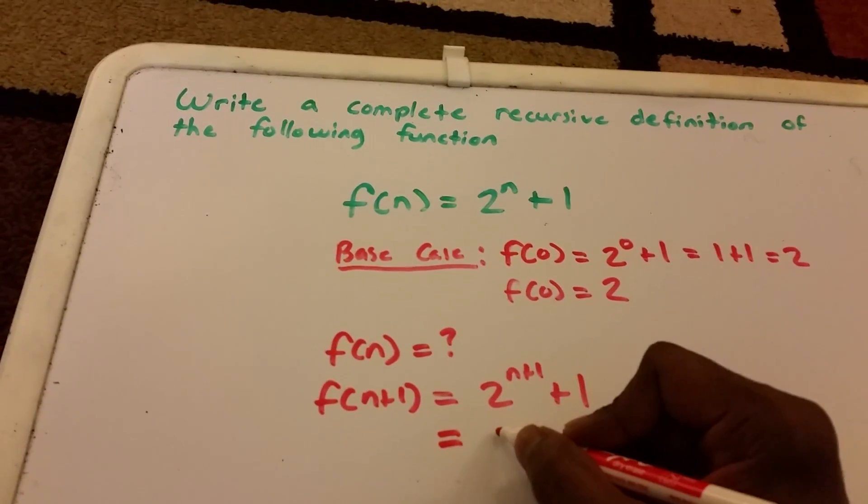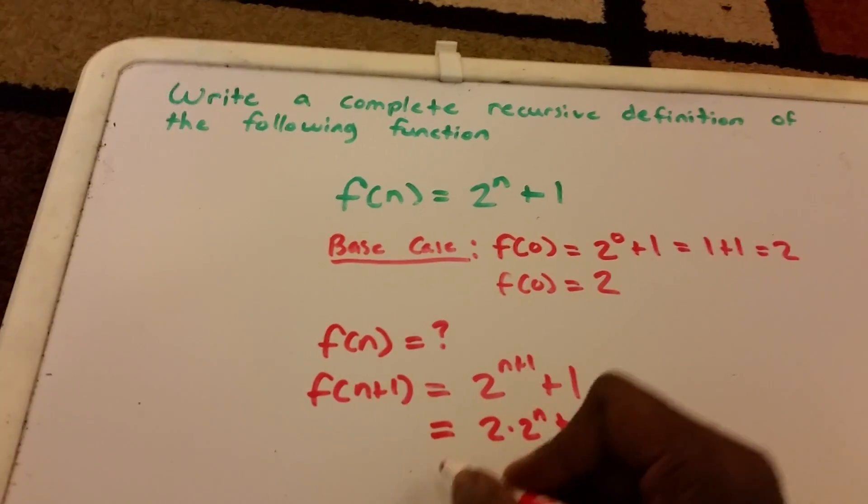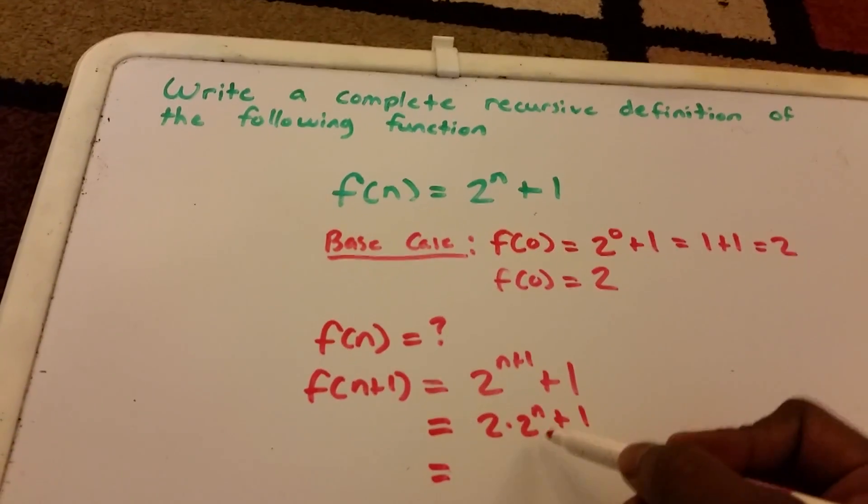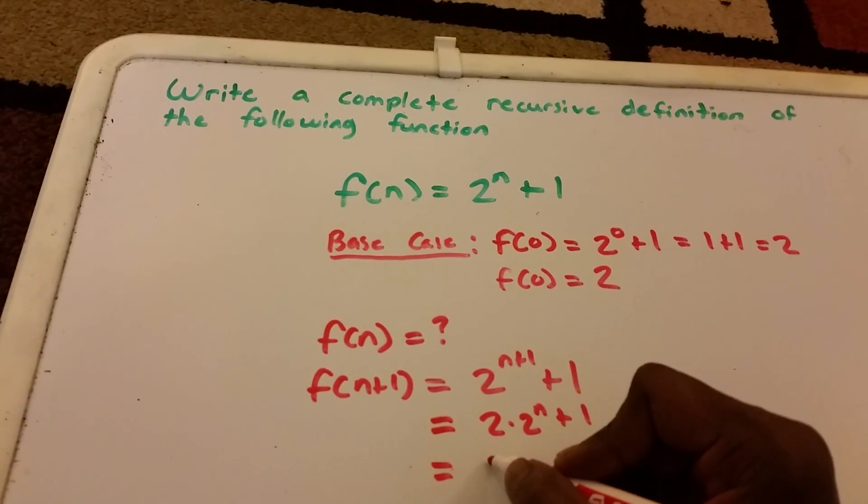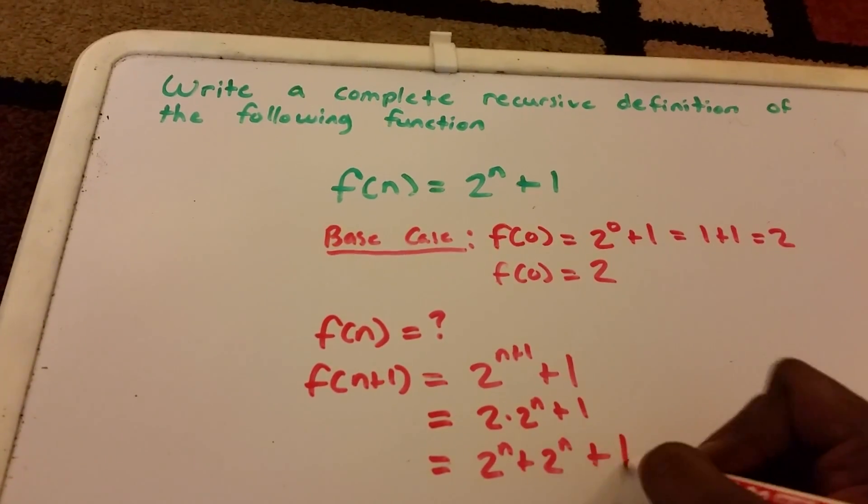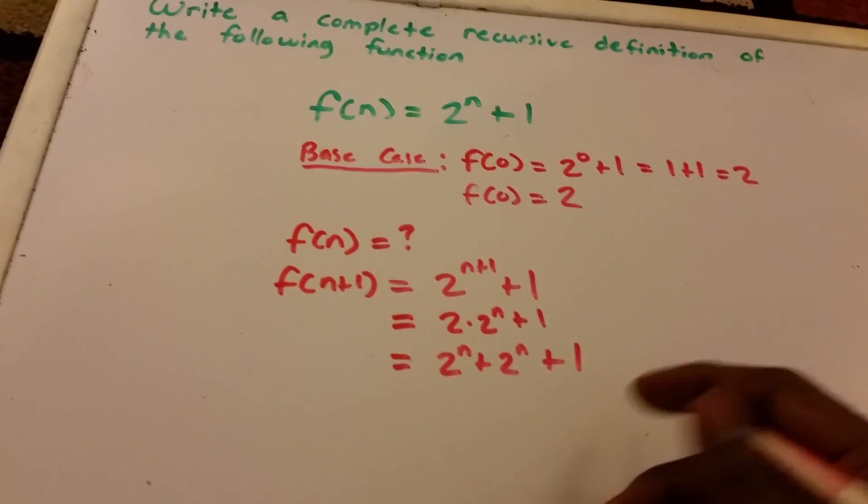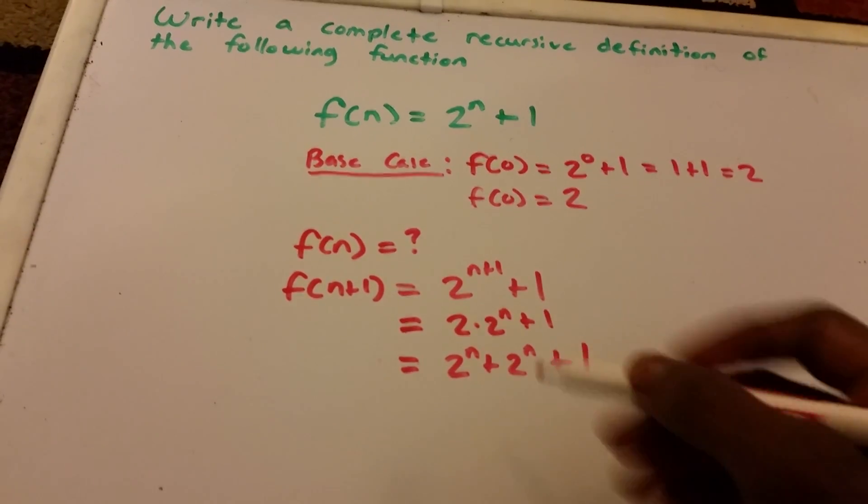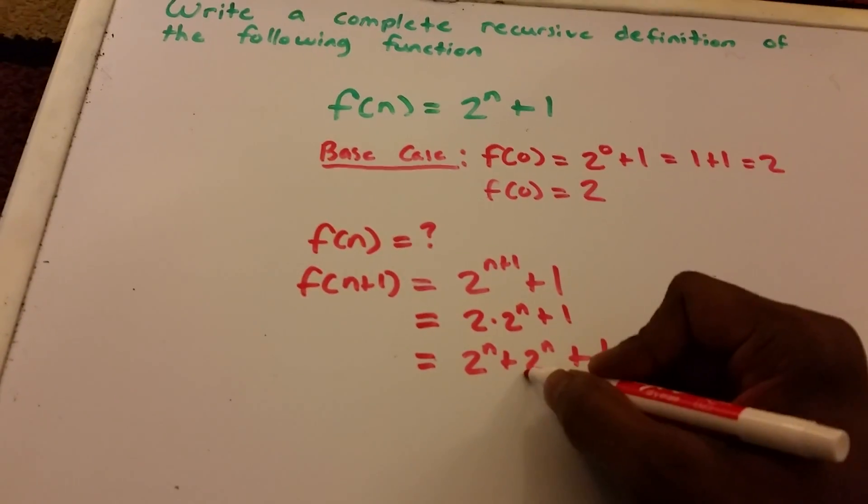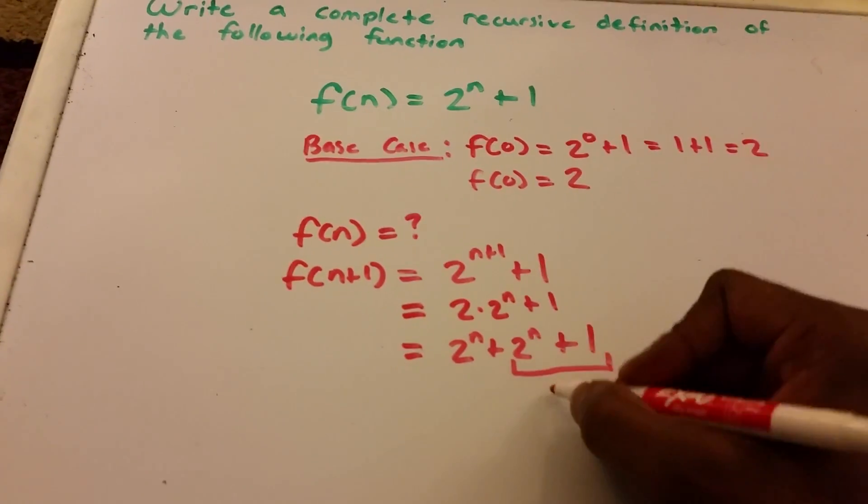So 2^(n+1) is equal to 2 times 2^n + 1, and 2 times 2^n is equal to 2^n + 2^n + 1. Now let's see, this is good because what we see is we see here that this is our original function of n.